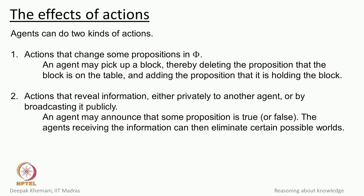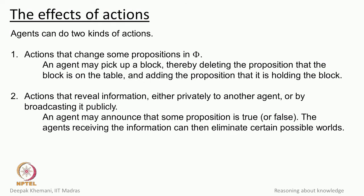The other kind of action that can happen is when agents reveal information — either privately to another agent, or publicly by broadcasting it or making a public announcement. An agent may announce that a particular proposition is true or false. For example, Annie will announce that she is holding card 0. The agents receiving the information can then eliminate possible worlds, trying to arrive at what is true.